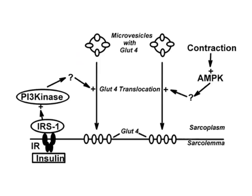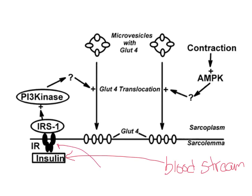Insulin that has been released through the beta cells in the pancreas will float around in the bloodstream, and when it reaches cells that can actually bind it, it binds insulin by this protein here called the insulin receptor. It gets complicated after binding to the insulin receptor, but basically what happens is binding of insulin to the insulin receptor causes what we call a cascade of activities.